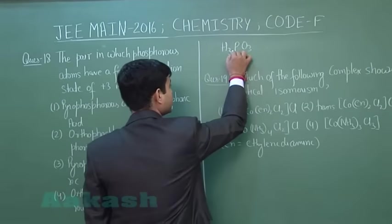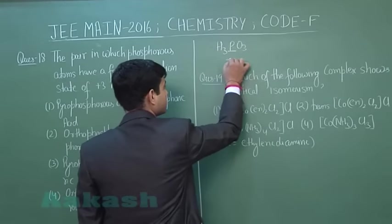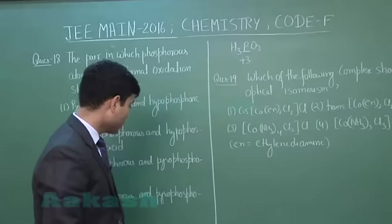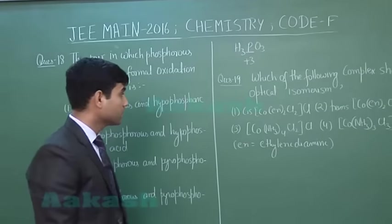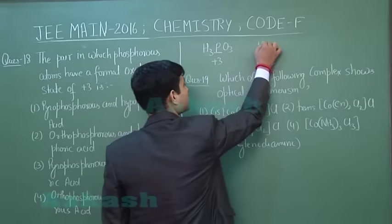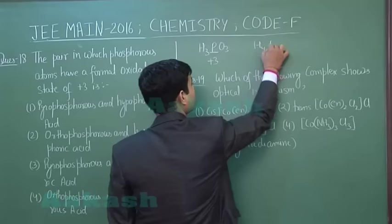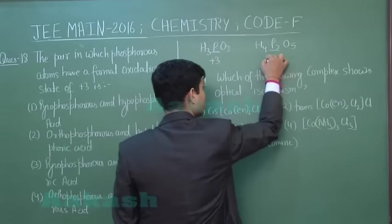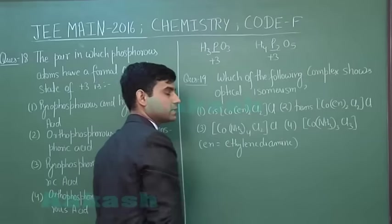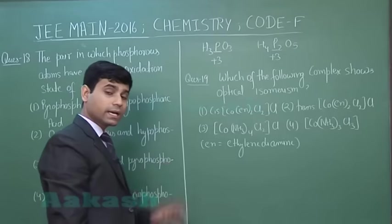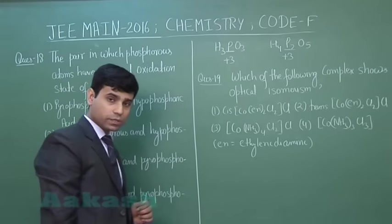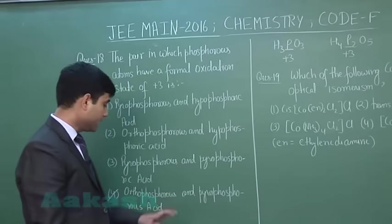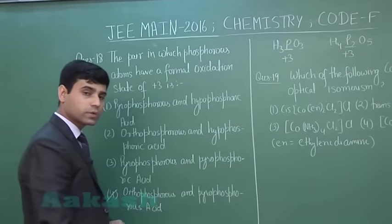In orthophosphorus acid (H₃PO₃), the oxidation state of phosphorus is +3. If we consider pyrophosphorus acid, its formula is H₄P₂O₅, and in this case also the oxidation state of phosphorus is +3. So the correct answer for this question is option number 4, which is orthophosphorus and pyrophosphorus acid.